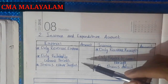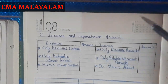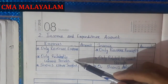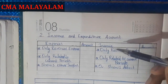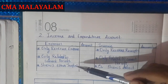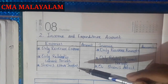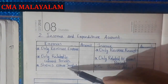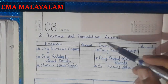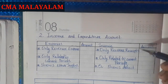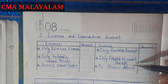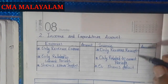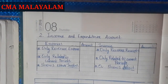We are doing a video on this channel. You can see the link in the description. In the current year, we can use the Income and Expenditure account. In profit-making companies, we use an Income and Profit account, but for non-profits, we use the Income and Expenditure account.